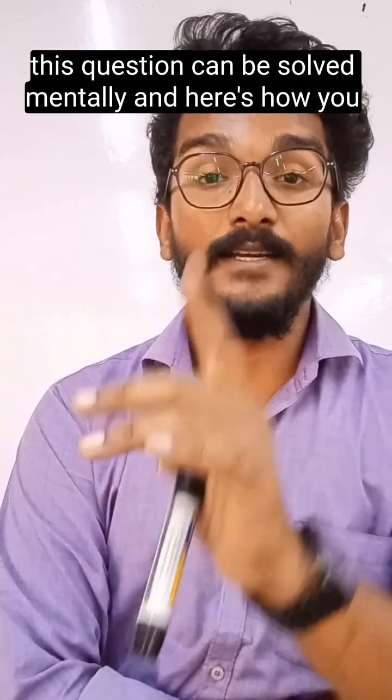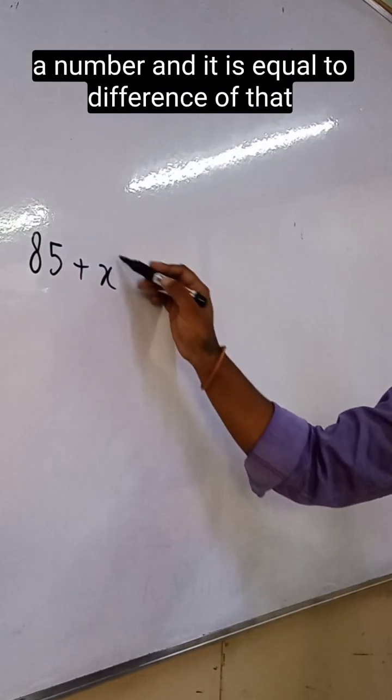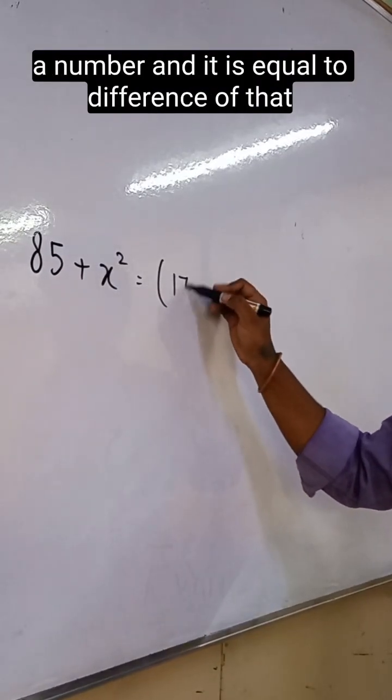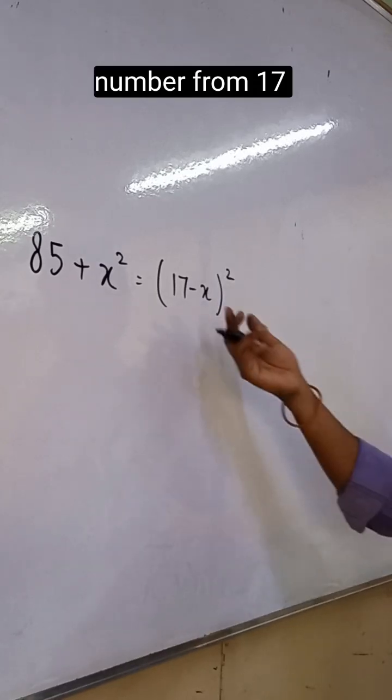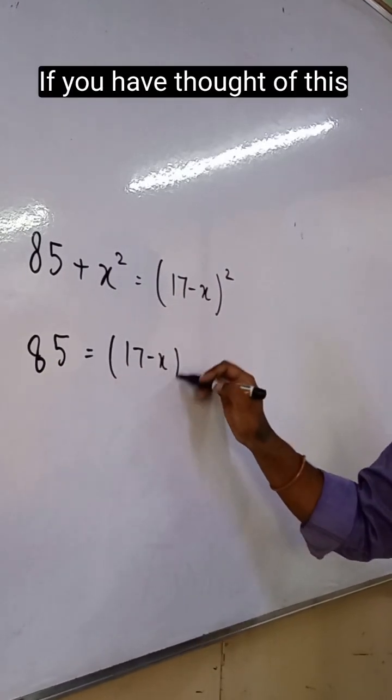This question can be solved mentally and here's how you can approach it. 85 is added to the square of a number and it is equal to the difference of that number from 17. So you can approach this question mentally if you have thought of this step.